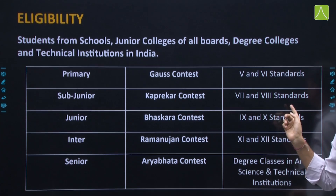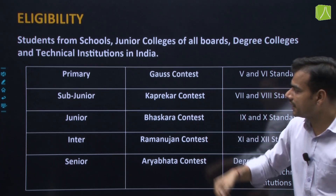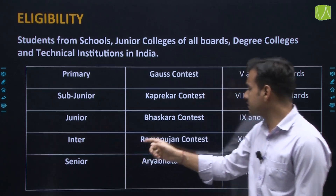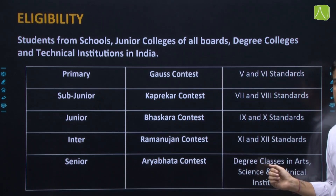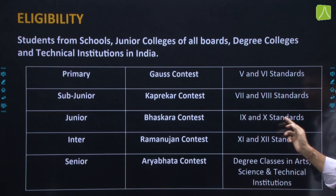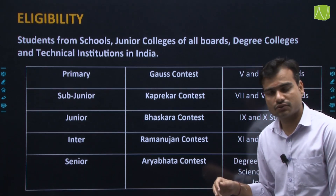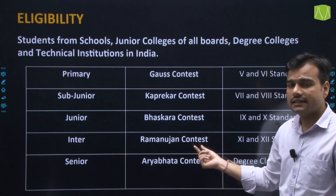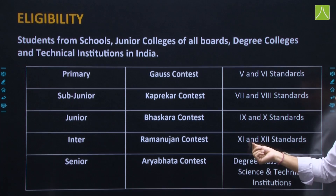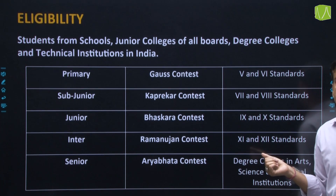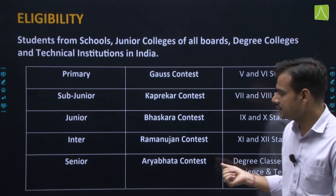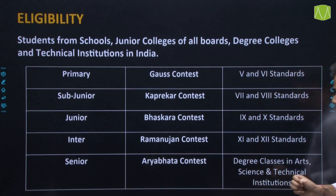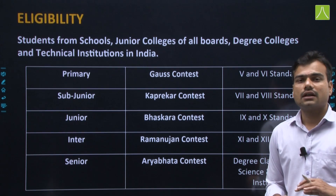The 7th to 8th standard students can appear for the Sub-Junior exam. After that, we have the Junior level — the Junior Contest — in which 9th to 10th standard students can appear. The next level is the Inter level, also known as the Ramanujan Contest, for 11th and 12th standard students. Finally, there is the Senior level, which graduation students can apply for.